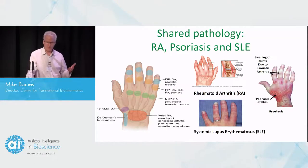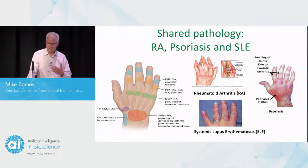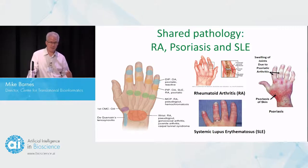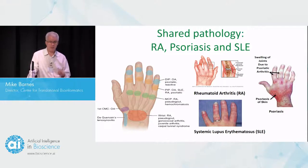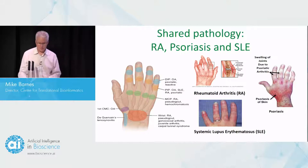There's also involvement with skin. So you see commonalities with lupus and psoriasis, for example, both having skin rash components and joint involvement. And you see joint swellings in both psoriatic arthritis, rheumatoid arthritis, and lupus.